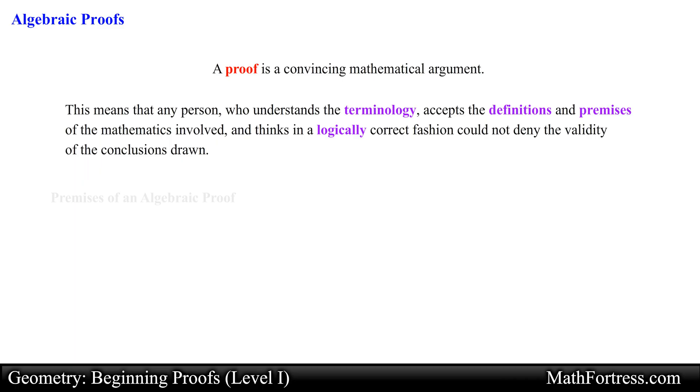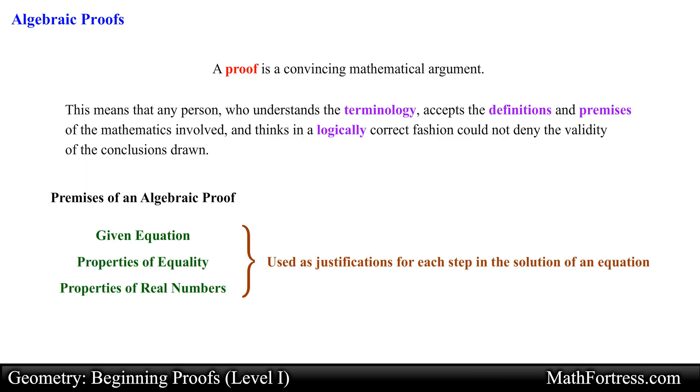When describing the solution of an equation as an algebraic proof, the premises for the proof are the given equation, the properties of equality, and the properties of real numbers. These premises may be used as justifications for each step in the solution of an equation.